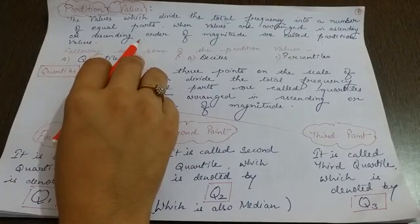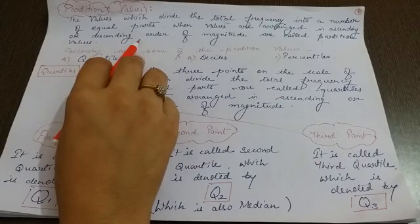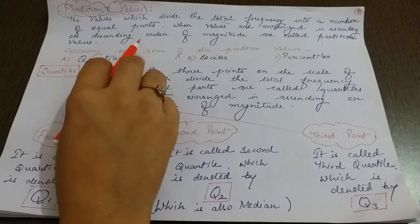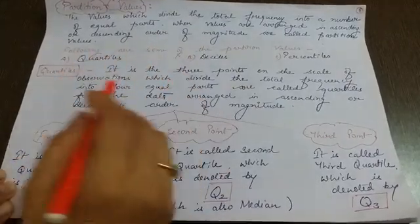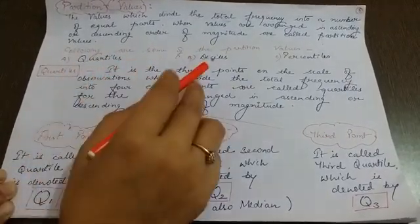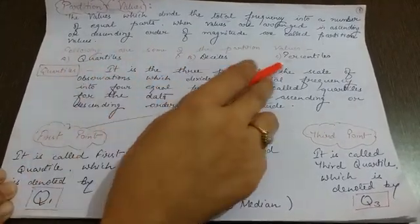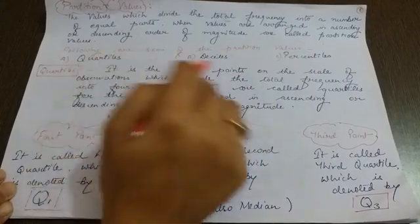You have to arrange the whole series either in ascending order or descending order and then divide it into equal parts. The partition value will be obtained by which type? There are three partition values: quartiles, deciles, and percentiles.